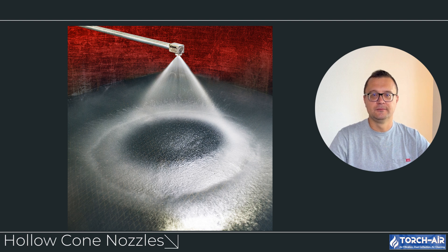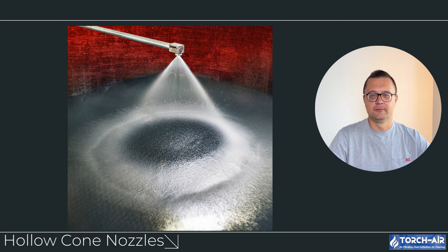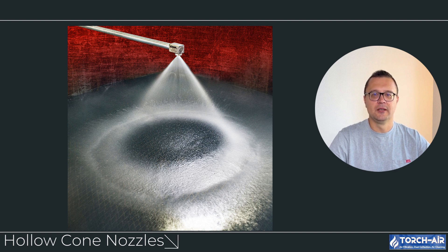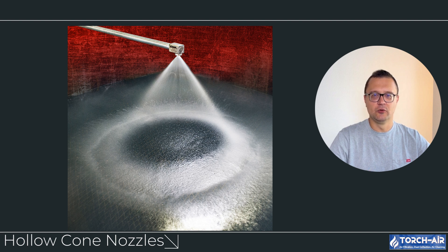Hollow cone nozzles produce a circular spray pattern with an empty center, focusing the liquid towards the edges. These nozzles are ideal for situations where you need a targeted spray with less liquid in the center. Best for lower liquid flow rates and applications where targeted scrubbing is necessary. They are great for reducing water usage while still providing efficient gas-liquid interaction. Consideration: they may not cover large areas as effectively as full cone nozzles, but are perfect for precision targeting of specific zones.